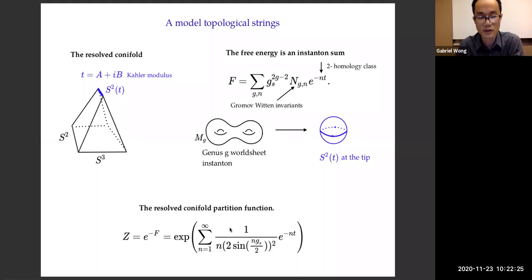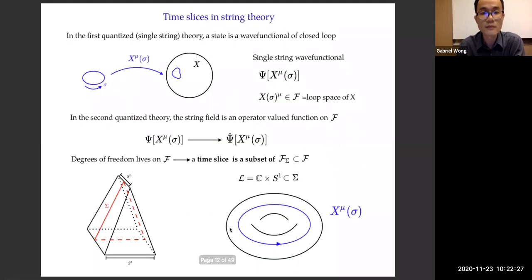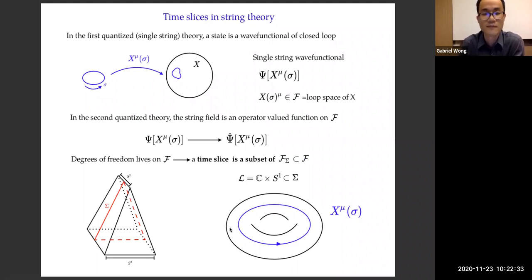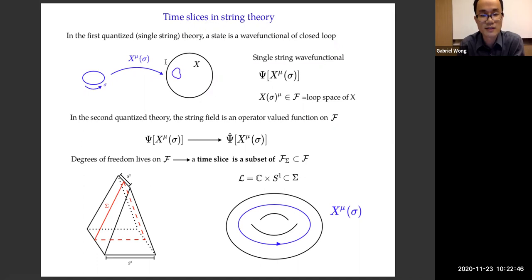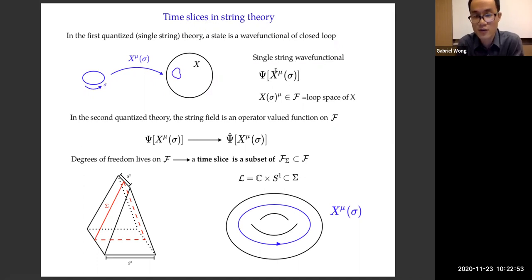Before defining the state, I need to talk about time slices. In string theory it's not the same as in QFT. In first-quantized string theory, a state is a wave functional of a closed loop: the closed loop is parameterized by a worldsheet spatial coordinate sigma, and X-mu is the embedding function mapping the string into the target space. The wave function of one string is actually a function of the entire loop configuration — a function on loop space of X, not on spacetime. When we second-quantize the theory, the string field is obtained by promoting this wave function to an operator, again valued on loop space. So the degrees of freedom live on the loop space, and a time slice will be a subset of the loop space rather than the spacetime.